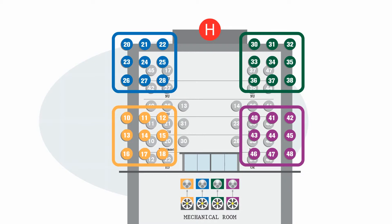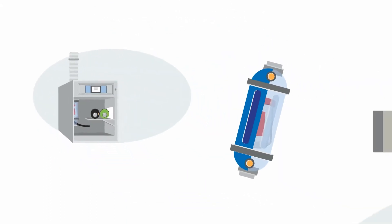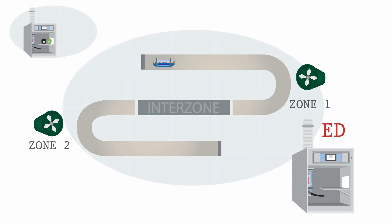Traditional systems work well for smaller systems. A carrier is vacuumed from an origin station. Once it reaches a turnaround point, the system switches to pressure and moves the carrier to its destination.